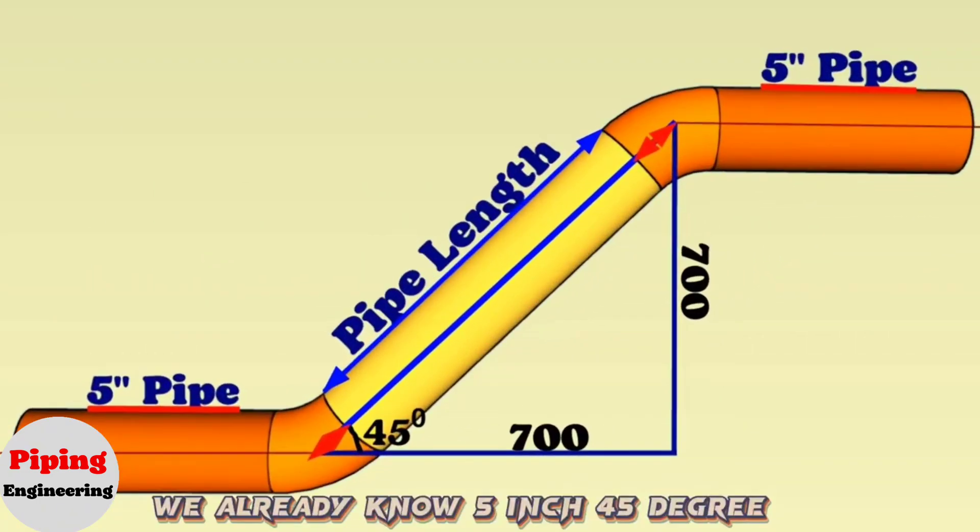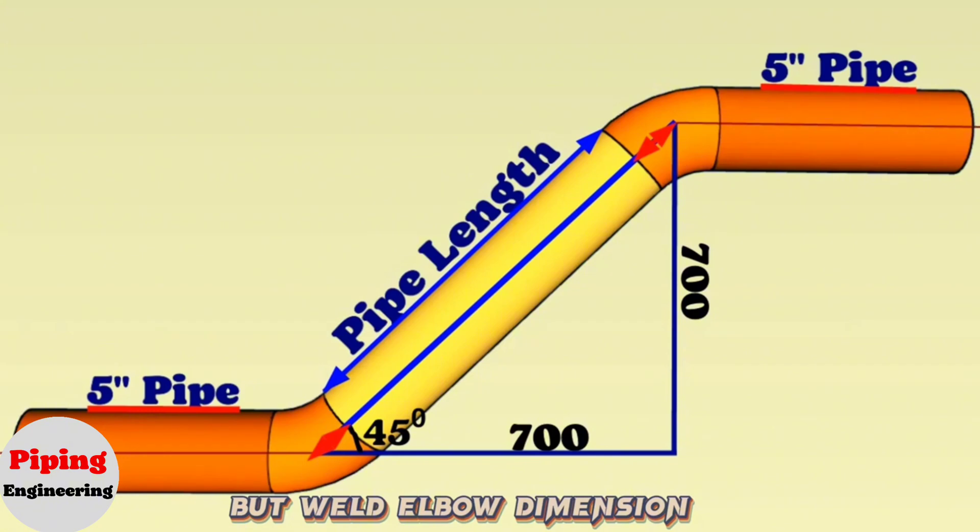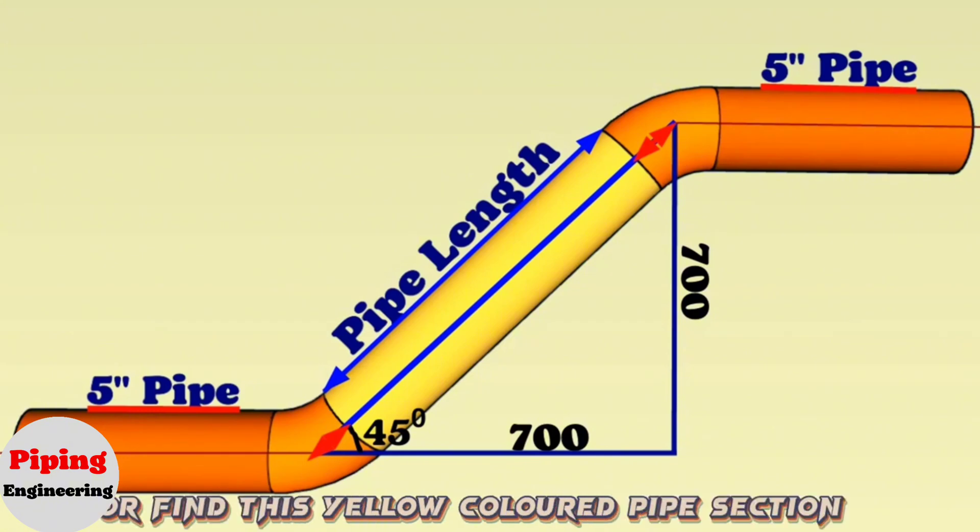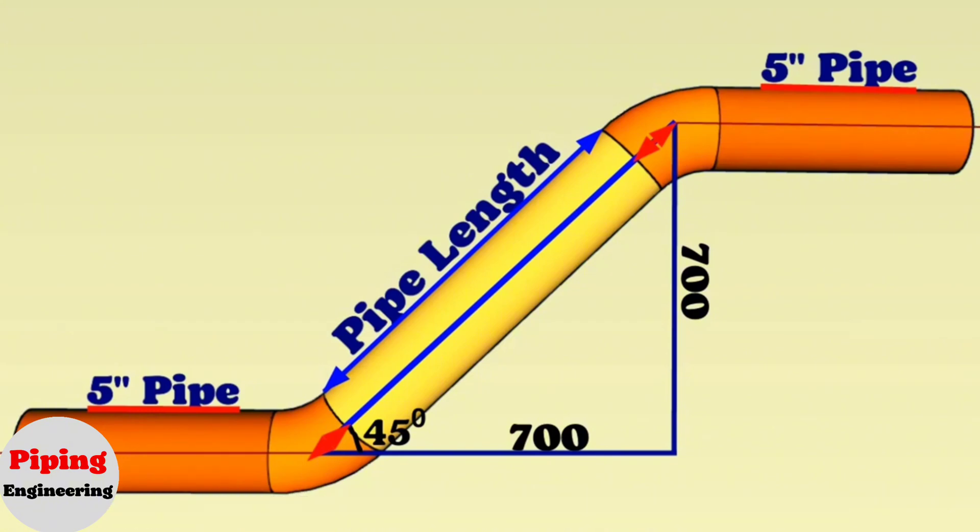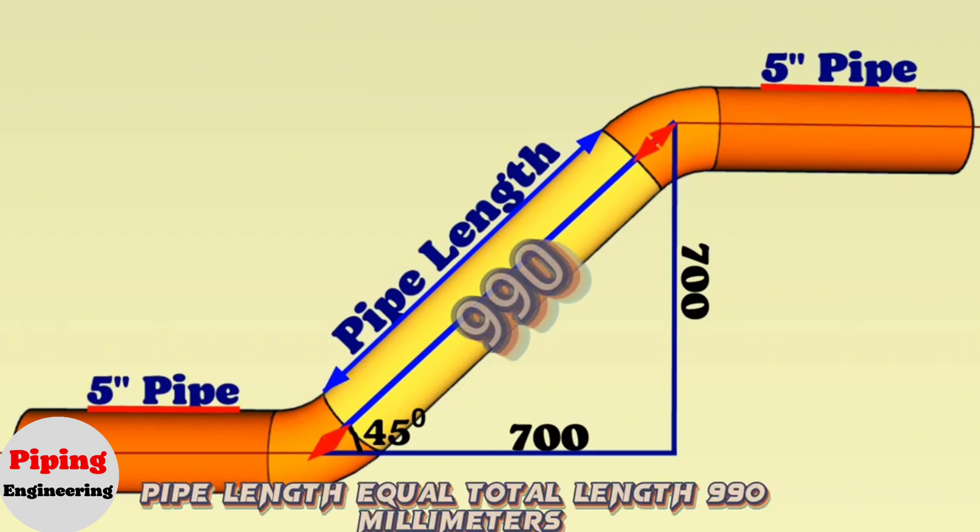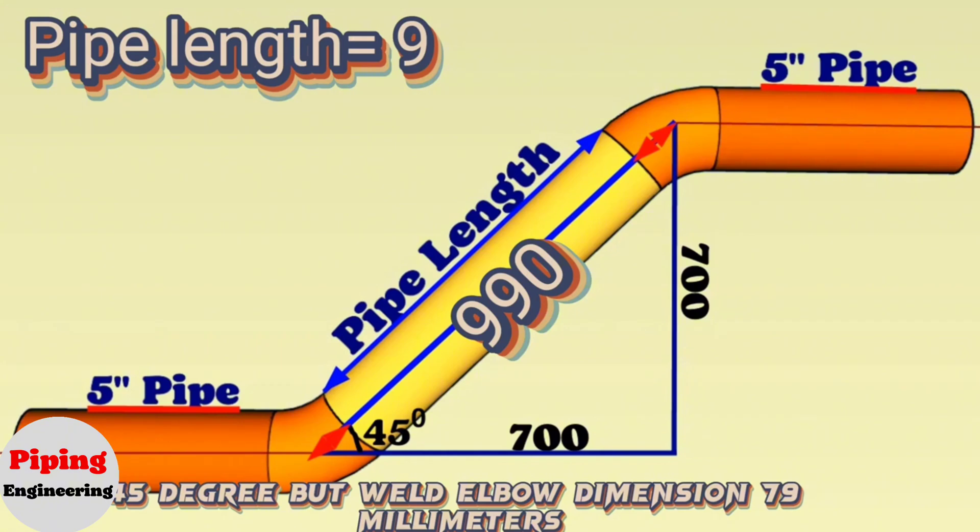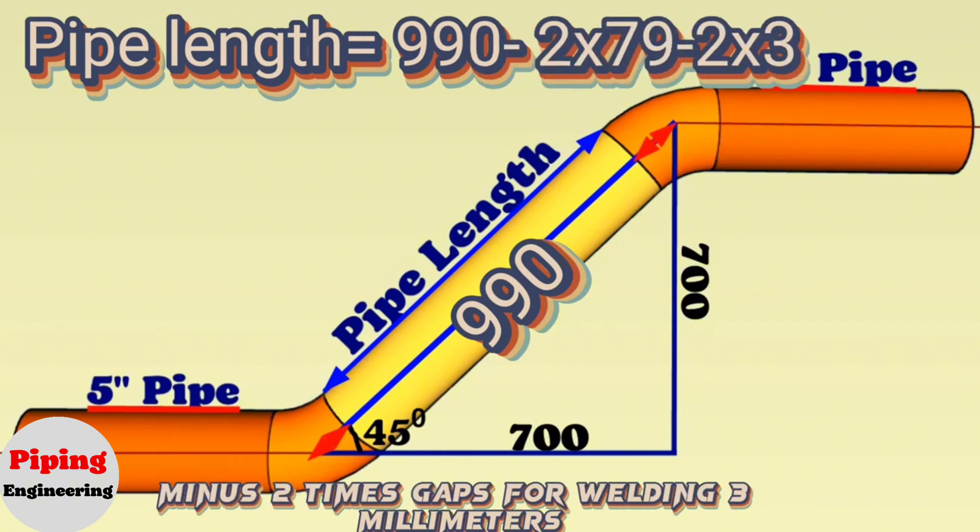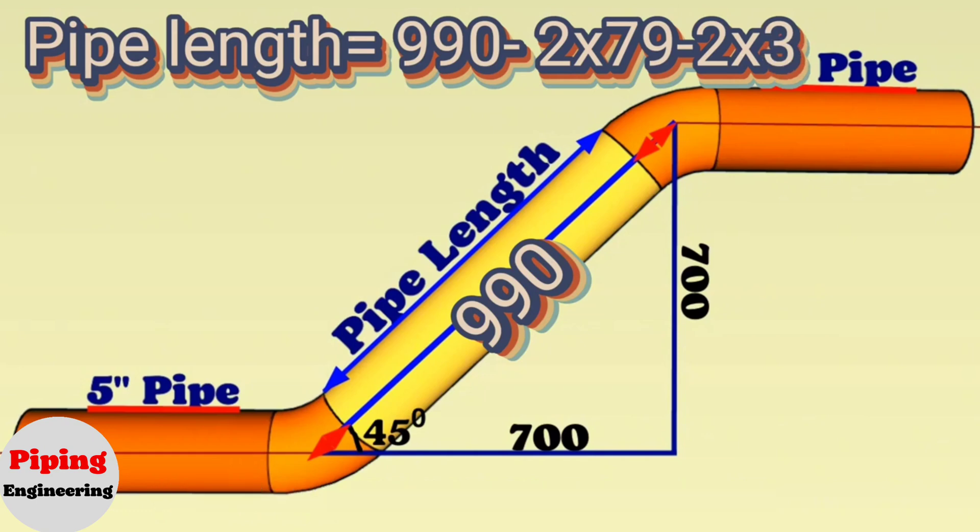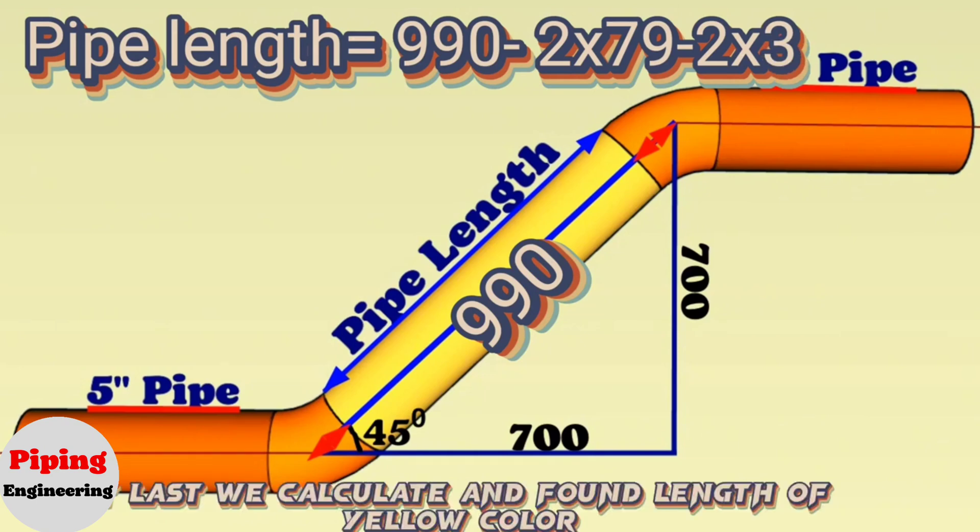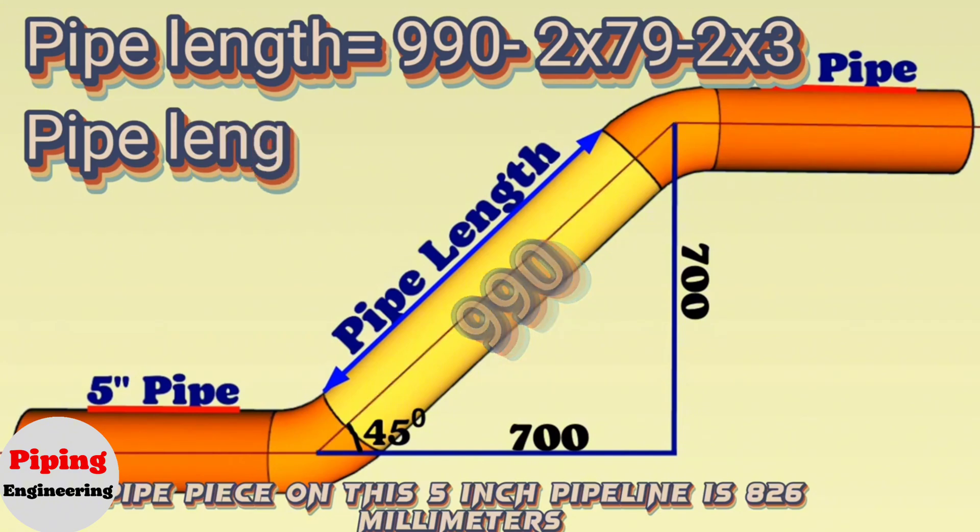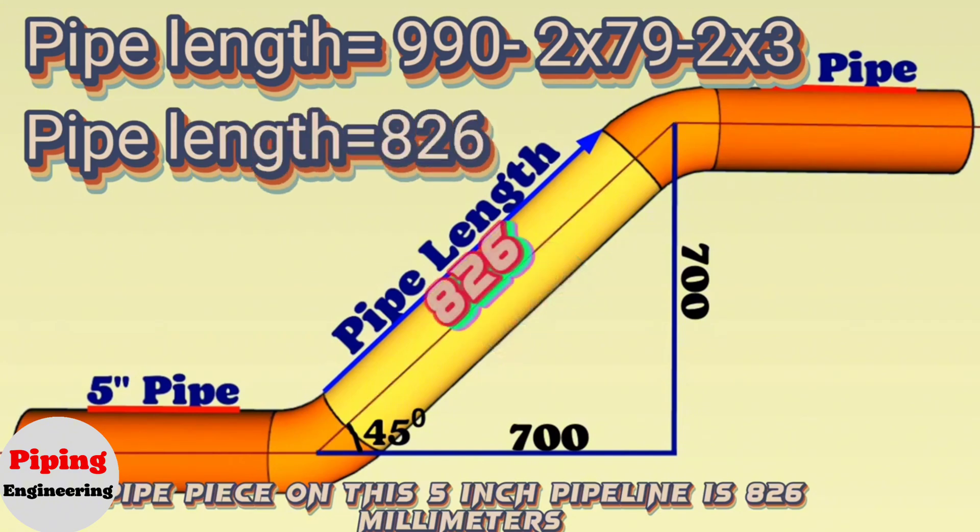We already know the 5-inch 45-degree butt-weld elbow dimension and can start to find this yellow-colored pipe section. Pipe length equals total length 990 millimeters minus 2 times 5-inch 45-degree butt-weld elbow dimension 79 millimeters minus 2 times gaps for welding 3 millimeters. At last we calculate and find the length of the yellow color pipe piece on this 5-inch pipeline is 826 millimeters.